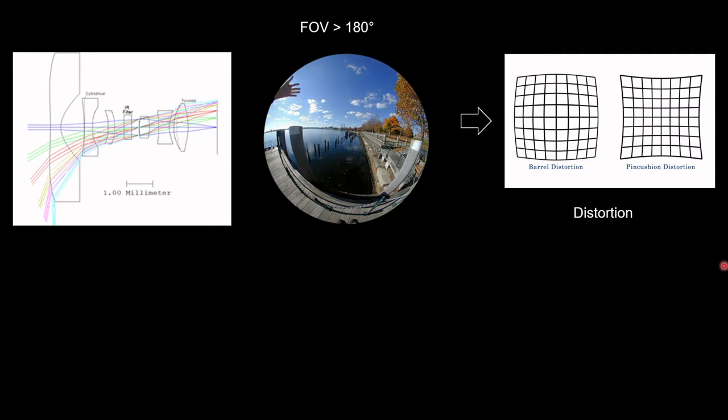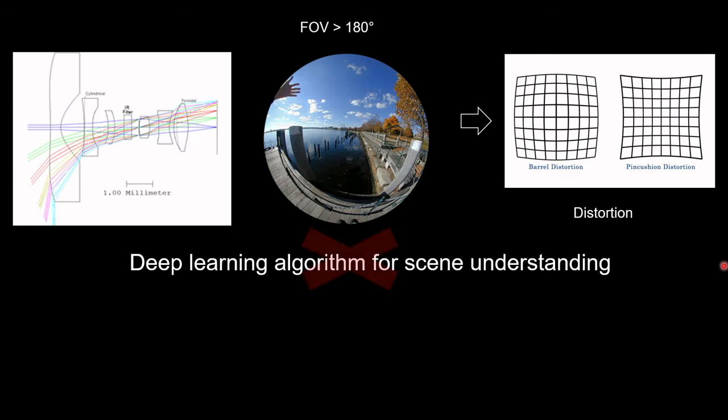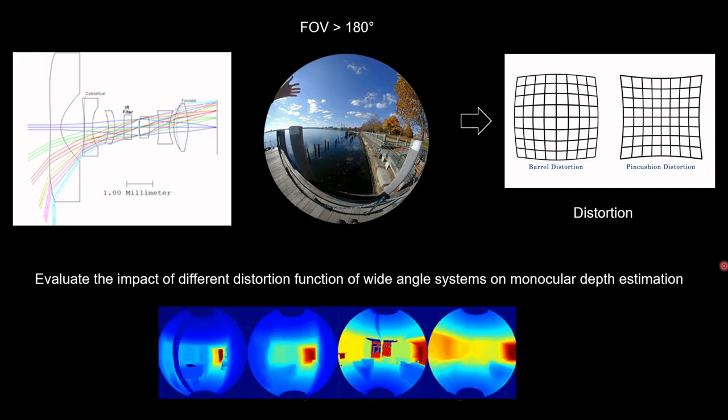This spatially varying property makes it challenging to use fisheye images on learning-based approaches using convolutional neural networks, as they do not respect the shift invariance principle. As removing distortion leads to pixel stretching and a crop in the field of view, our work focuses on studying the impact of different kinds of distortion on single shot depth estimation.